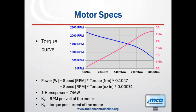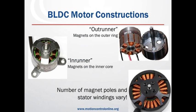BLDC motors can be constructed in many different ways. The in-runner has the rotor on the inside, while the out-runner has the outer ring with the magnets as the spinning part. There are many different configurations possible, and generally the more poles you have, the more torque the motor will generate.